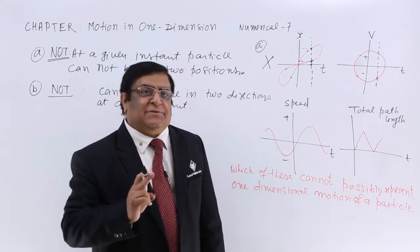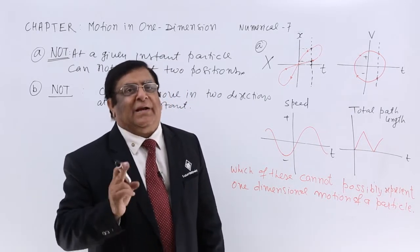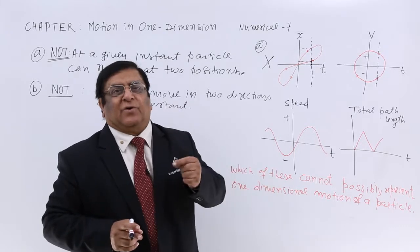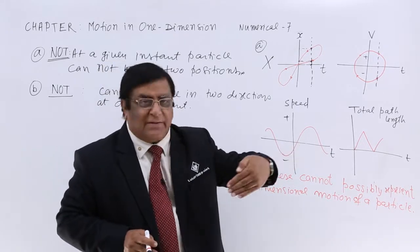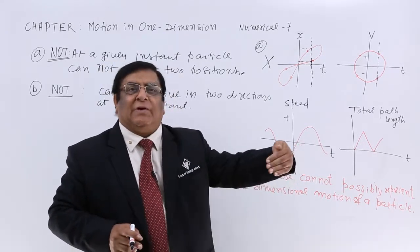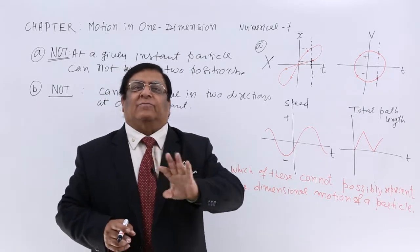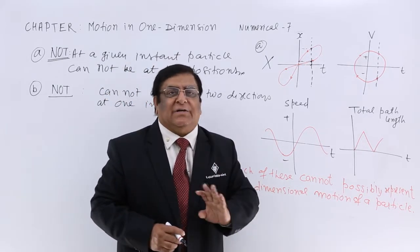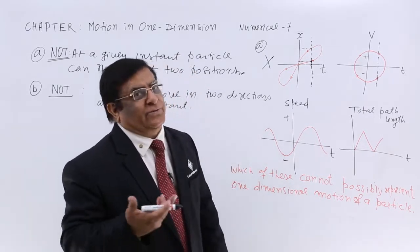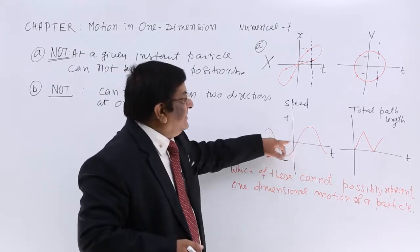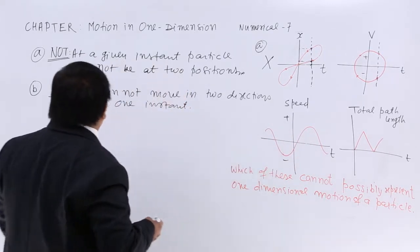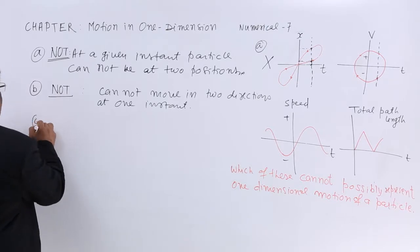Speed is distance upon time and distance is always positive. Because even if we turn back, the distance keeps on adding up and it is always taken as positive. There is no negative distance. Therefore there is no negative velocity. But this shows negative. So this is also not possible.